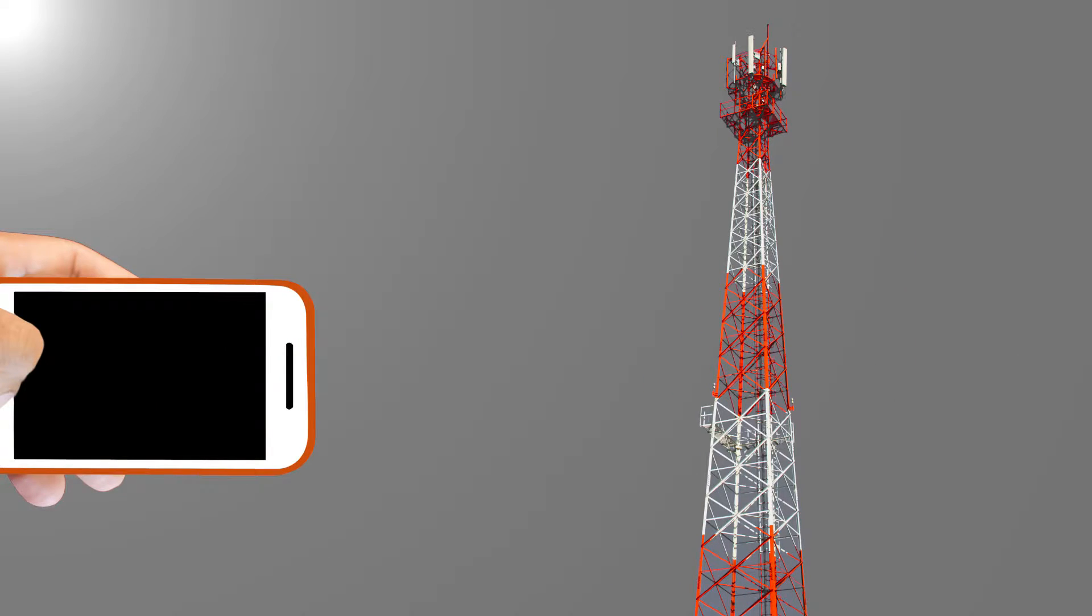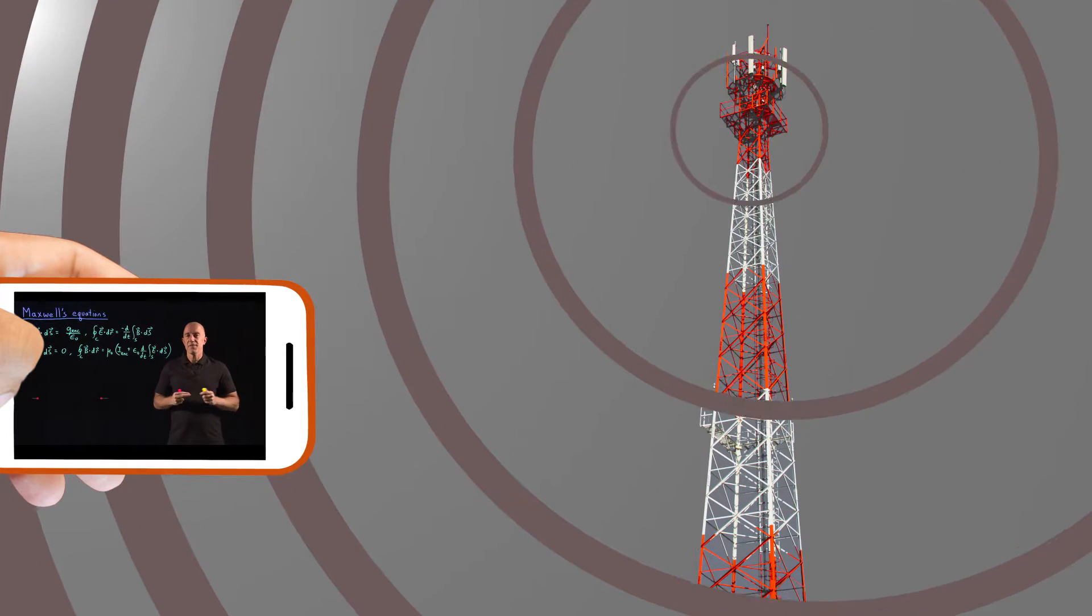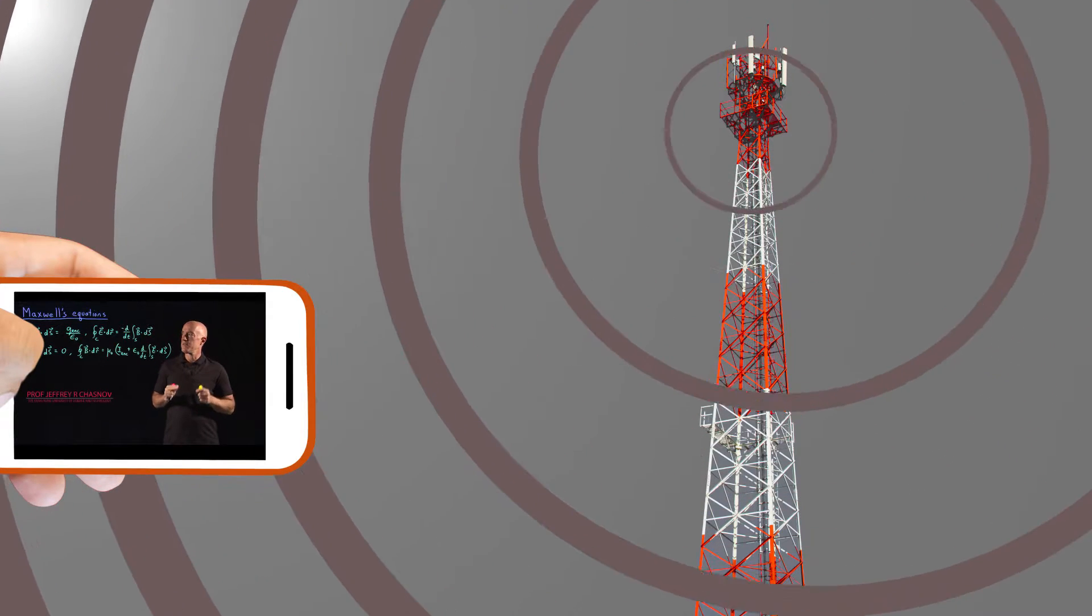A cell phone tower radiates electromagnetic waves in three dimensions and these waves can be described by Maxwell's equations written in the language of vector calculus.